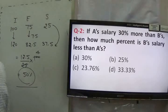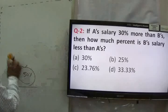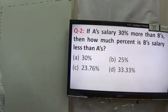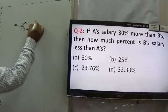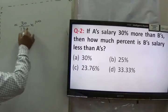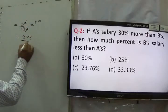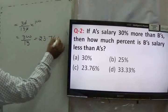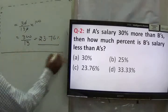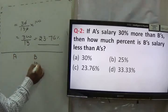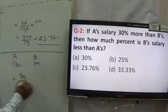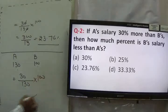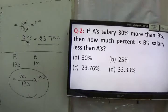Read the next question carefully — statement number 2. It is given that A's salary is 30% more than B's. Then B's salary is how much percentage less than A's salary? We have a direct formula: R upon (100 plus R) into 100, which gives 30 upon 130 into 100 = 300/13, approximately 23.76%. Alternatively, if B's salary is 100 and A's is 130, then B is less than A by 30 upon 130 into 100, giving the same answer of 23.76%.